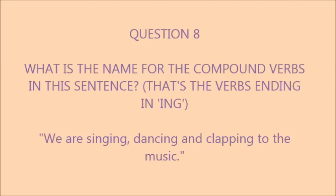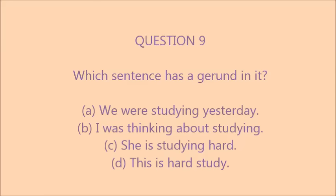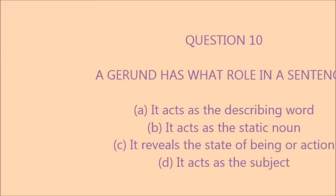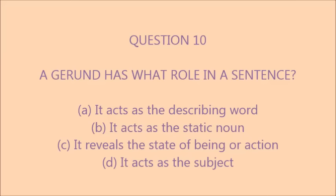Question eight: what is the name for the compound verbs in this sentence — 'We are singing, dancing and clapping to the music'? These verbs have a specific name. Question nine: which sentence has a gerund? A. We were studying yesterday. B. I was thinking about studying. C. She is studying hard. D. This is hard study. Question ten: a gerund has what role in a sentence? A. It acts as the describing word. B. It acts as the static noun. C. It reveals the state of being or action. D. It acts as the subject.